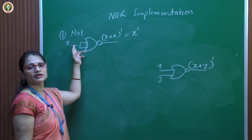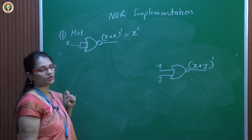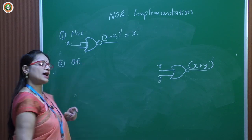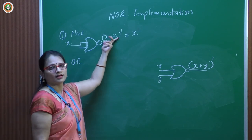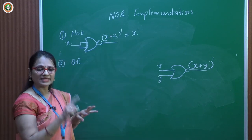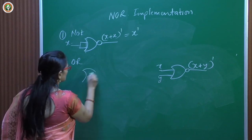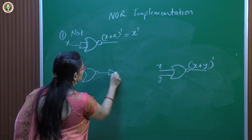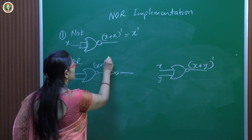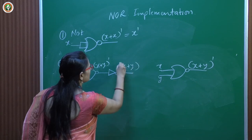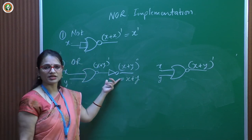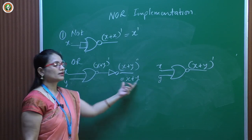To implement OR using NOR: NOR followed by NOR gives double complement. For inputs X and Y, first NOR gives (X + Y)', second NOR gives (X + Y)'' = X + Y. So two NOR gates in series implement the OR gate.